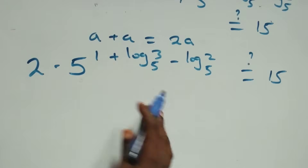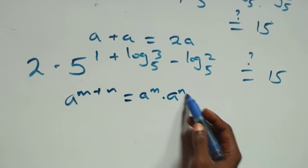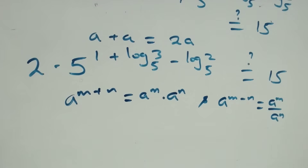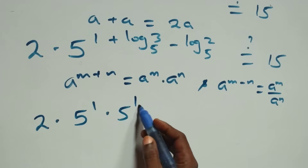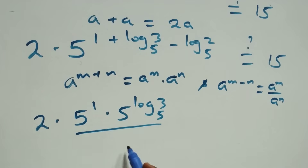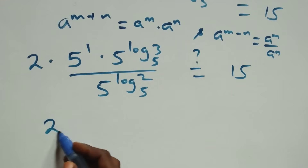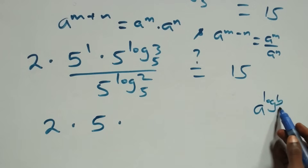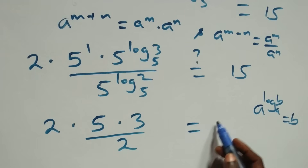We apply the law of indices. When we have a raised to power (n plus n), it's the same as a raised to power n times a raised to power n. And a raised to power (n minus n) is the same as a raised to power n over a raised to power n. So here we have 2 times 5 raised to power 1, times 5 raised to power log 3 base 5, over 5 raised to power log 2 base 5, equals 15. When we have a raised to power log b base a, this equals b. So 5 raised to power log 3 base 5 equals 3, and 5 raised to power log 2 base 5 equals 2.